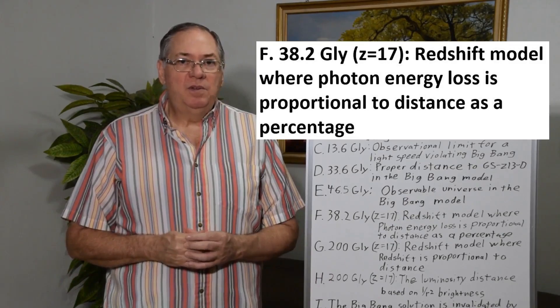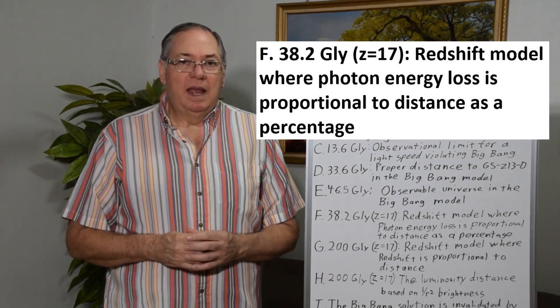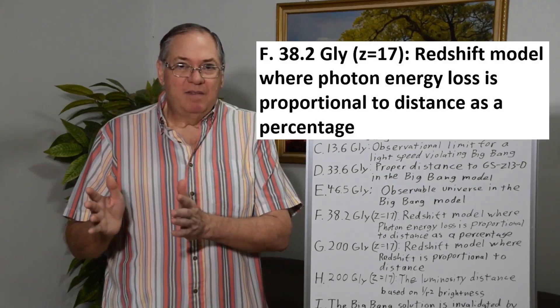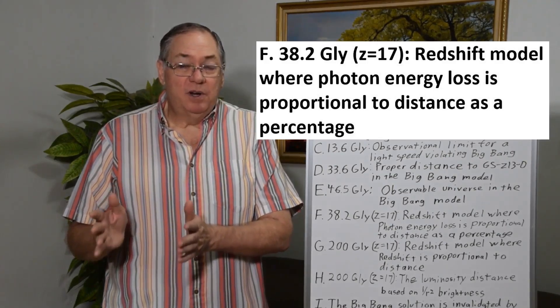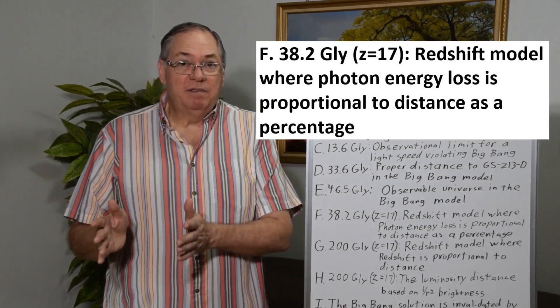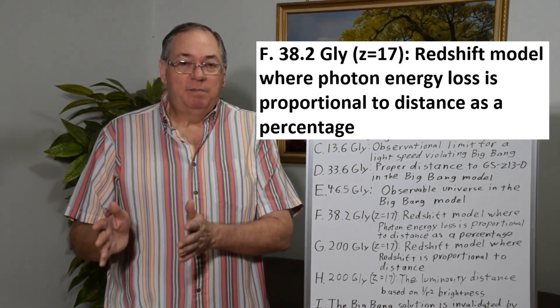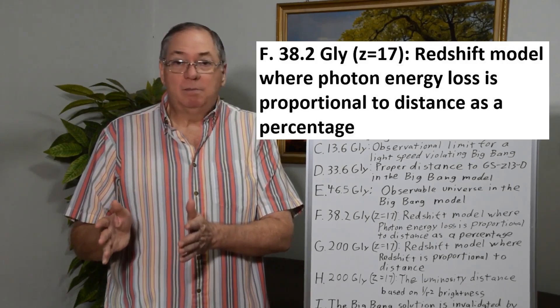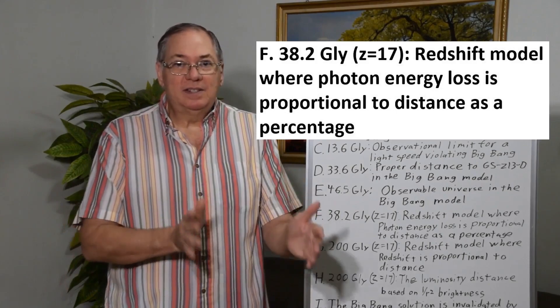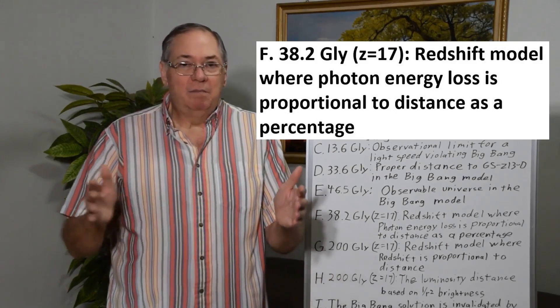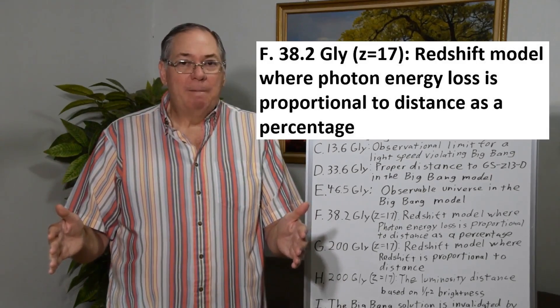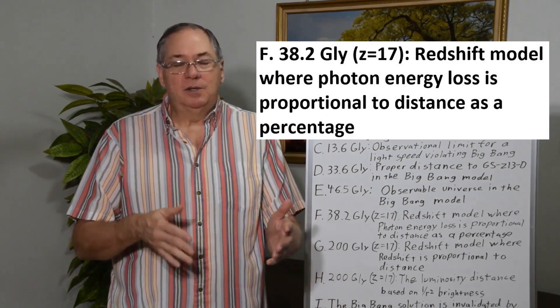Now if we go to redshift model, as I said, there's one model where you're losing energy and redshifting in the same proportion as a percentage. So you lose, say, 10% for this distance and 10% for this distance. But that's not 20% for the total, the linear model. It's compounding and multiplying, so 21%.